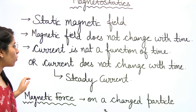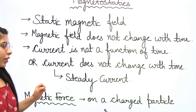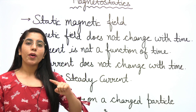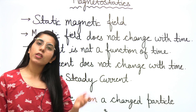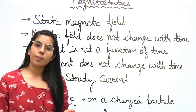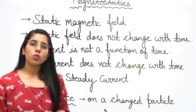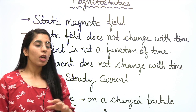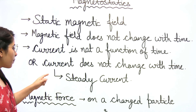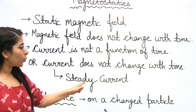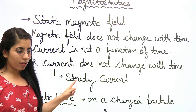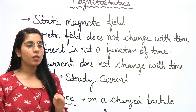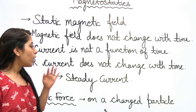This is another very important point. When current is not changing with time, this type of current is known as steady current. That has been mentioned here, you can have a look at it. I hope everything is clearly visible to you.